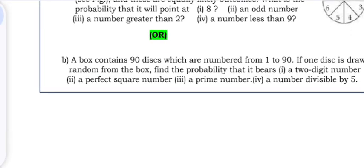What is the probability of an odd number, a number greater than 2, or a number less than 9? Question 7: A box contains 90 discs which are numbered from 1 to 90. If one disc is drawn at random from the box, find the probability that it bears a two digit number.